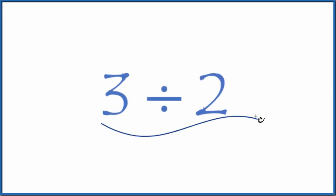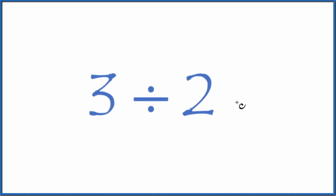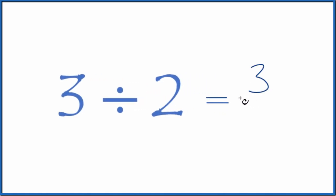Let's divide 3 by 2. And here's how we could do it. We can think of 3 divided by 2 as a fraction. That'd be 3 over 2.